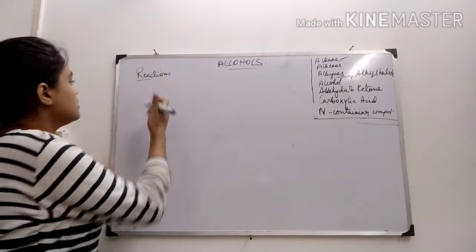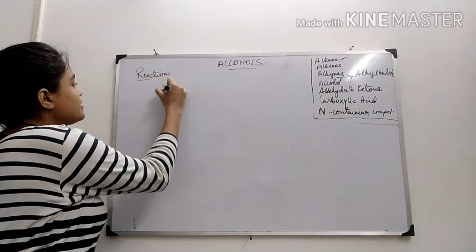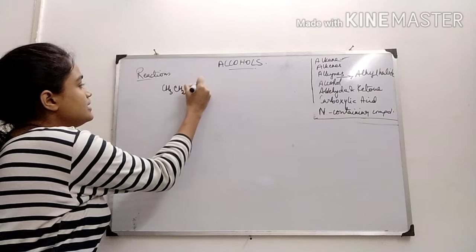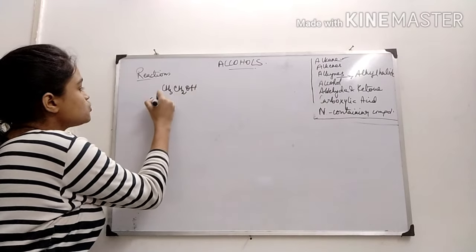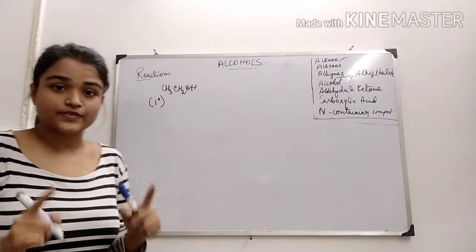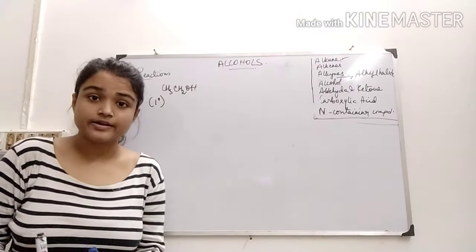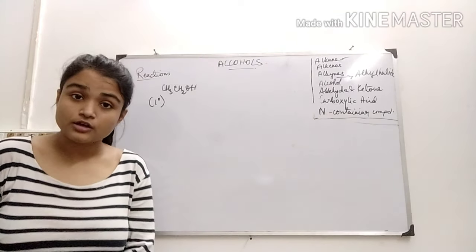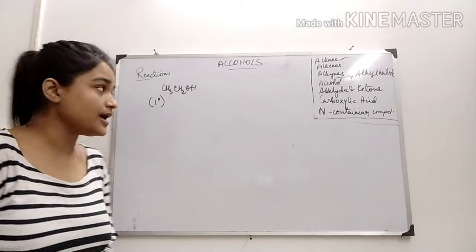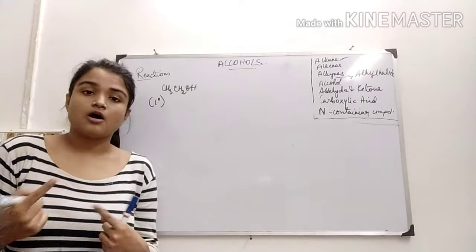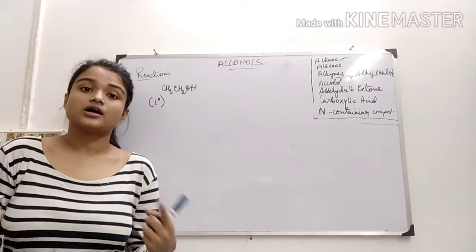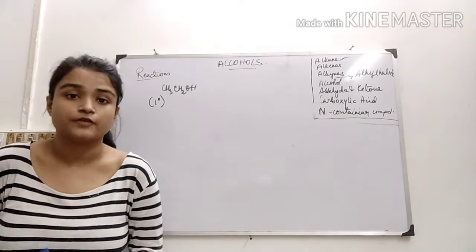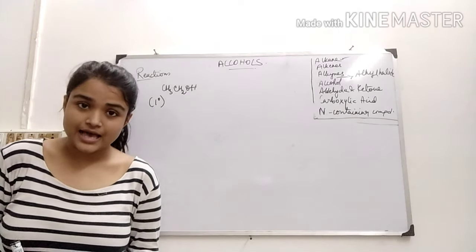If I take a primary alcohol — ethanol, which is a 1° alcohol — it will form an aldehyde, not a ketone. And if it is oxidized further using a strong oxidizing agent, it will be converted to a carboxylic acid.